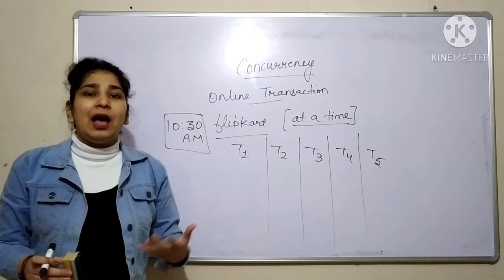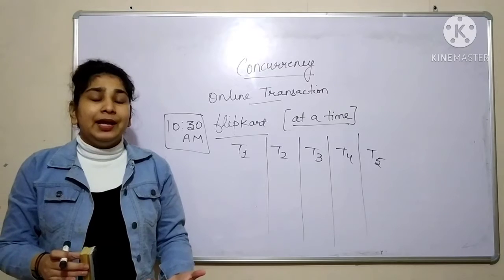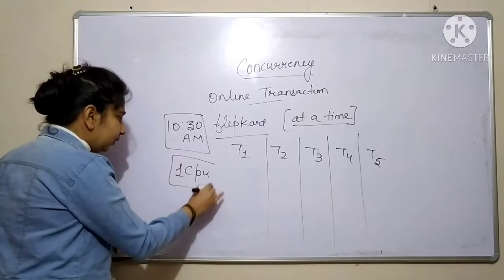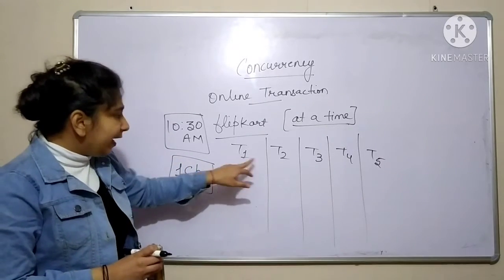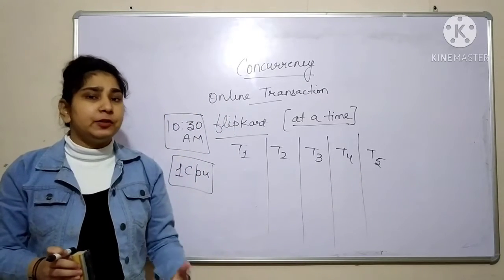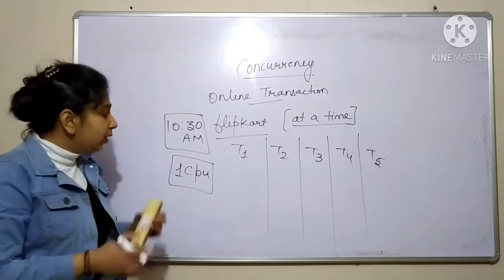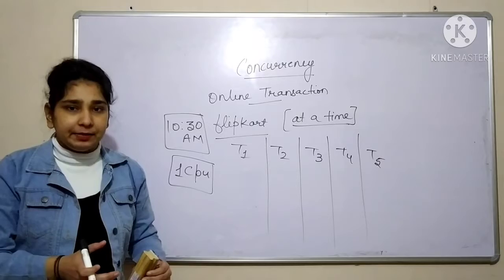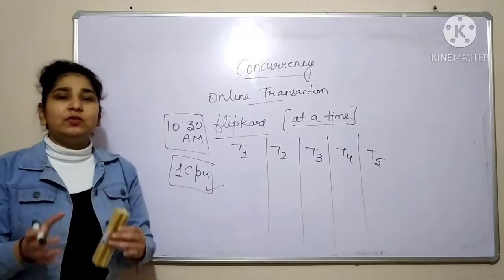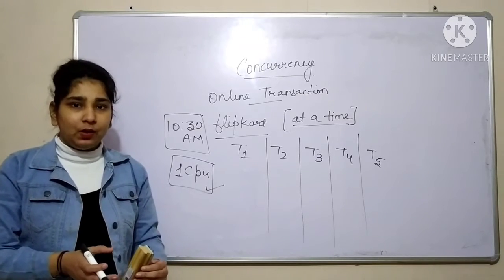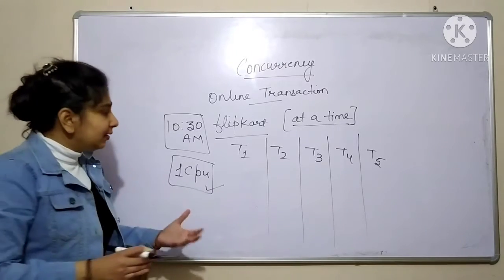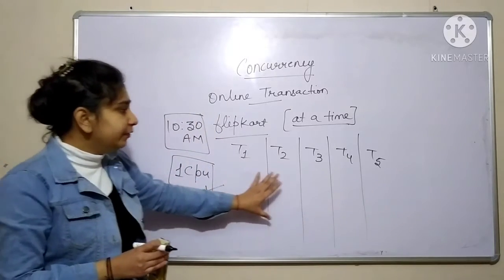It really depends how many CPUs you are using. In most cases we are having only one CPU. Since we have five transactions to be executed at one particular point of time, we will be executing only one transaction at a time, because we have only one CPU and can process only one transaction at a time. So we have to speed up the execution of all these five transactions.